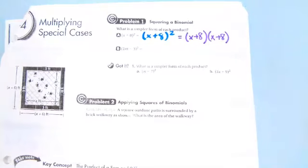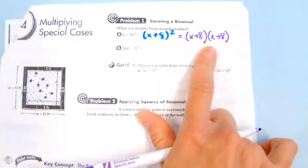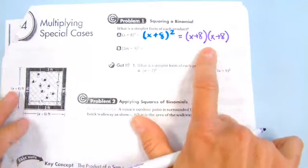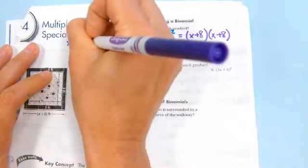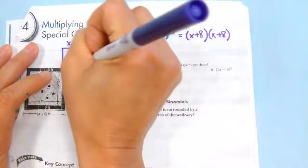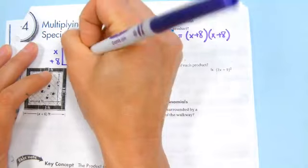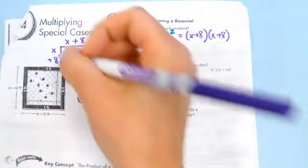We just learned that when we do this, we can either use the box method or the FOIL method. I'm going to use the box method to show you. So I would set it up like this.